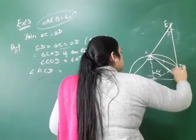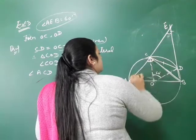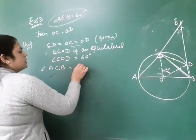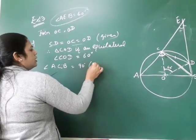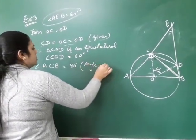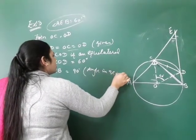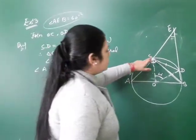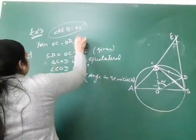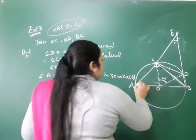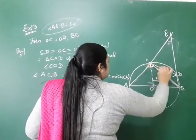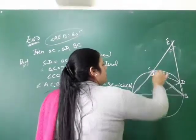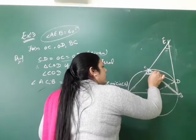We join BC. So we have angle ACB. Since AB is the diameter, angle ACB is a semicircle angle, so this is 90 degrees. Angle in a semicircle is 90 degrees.